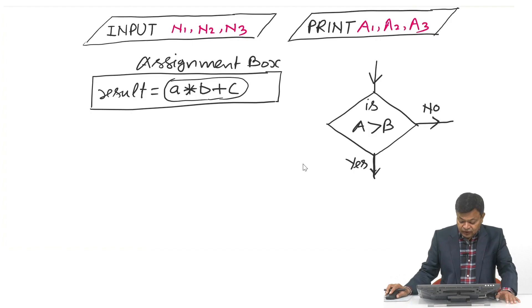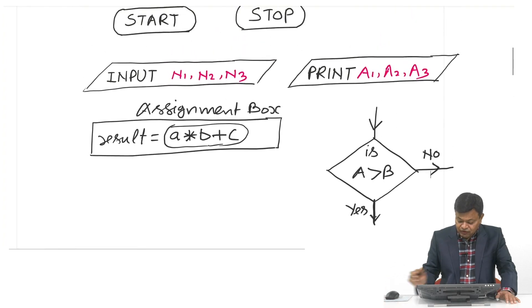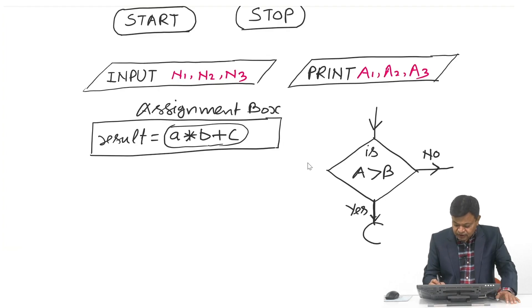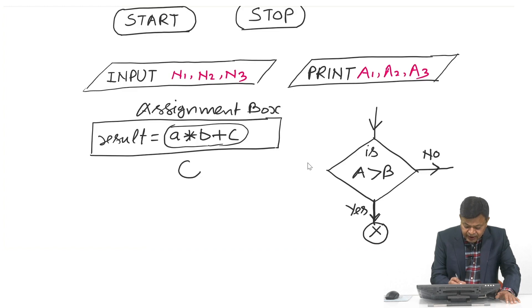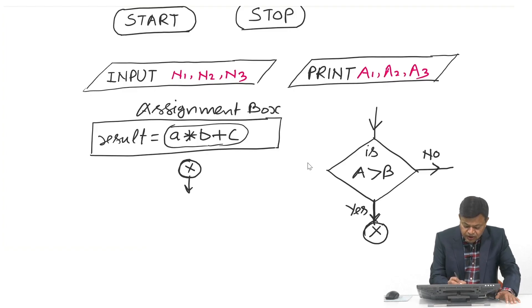At times you also need connectors. Suppose you run out of space — you draw a connector, which is a circle, and write a label like 'X' inside it. Then, on the next part of the flowchart, you write 'X' again, meaning you resume from that point. So far we have discussed these symbols; when we draw loops, we will discuss more symbols.